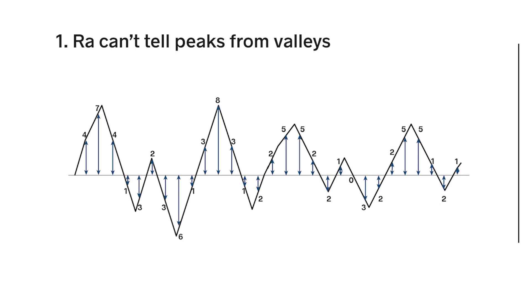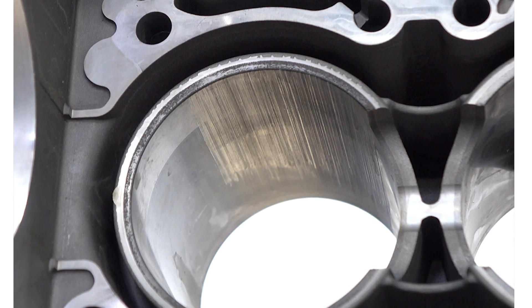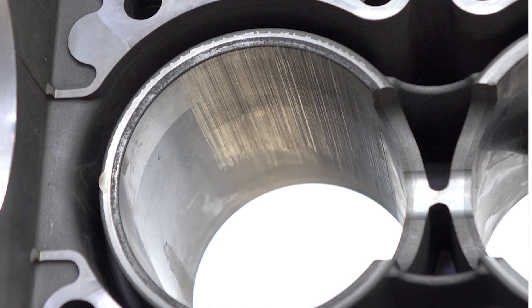First, it sees heights as absolute values. A 0.1 micron below the mean line will have the same impact on RA as a 0.1 micron above it. If you think your process is producing valleys for lubrication, but it's actually producing peaks, you may not be able to tell from RA alone.